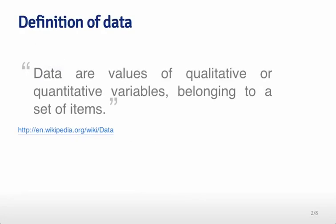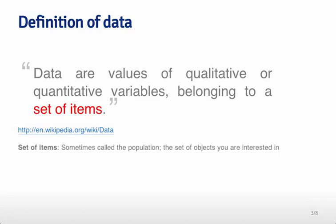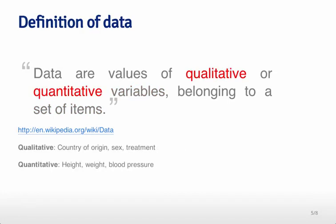First, I want to talk about the definition of data. As we saw in the data scientist's toolbox, data are values of qualitative or quantitative variables belonging to a set of items. The set of items might be the population or the set of objects that you're interested in. The values correspond to variables, and variables are the things that you're measuring — either in qualitative or quantitative terms.